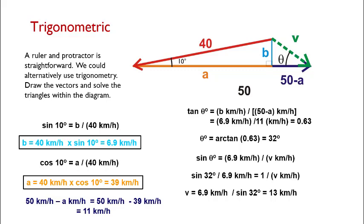That's very close to our measurement that we made using a ruler. So another way to solve this will of course give us 13 kilometers per hour at 32 degrees south of east, just like we solved previously.